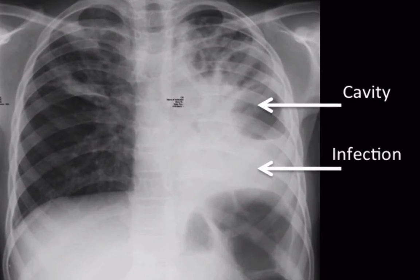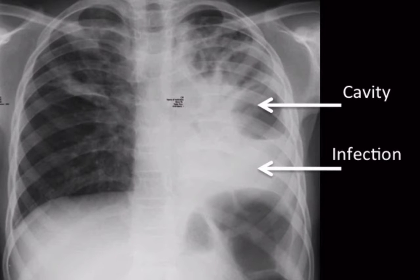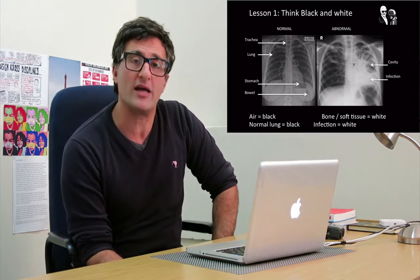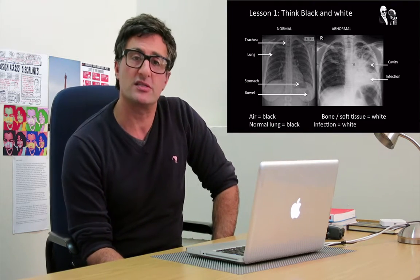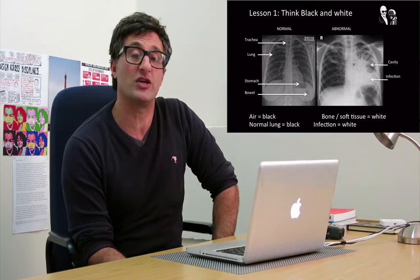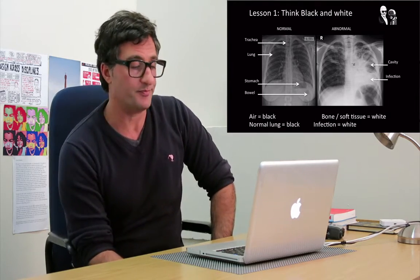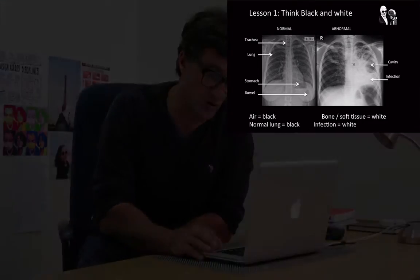An abnormal chest x-ray demonstrates left-sided disease in the lower portion of the lung — that's all become white. In the center there appears a cavity containing air, which is once again black. So pathological things may be black or white depending. It's simply much easier to consider that you expect the lung to be black, and once it's white it's abnormal. That's a very simple lesson to learn.